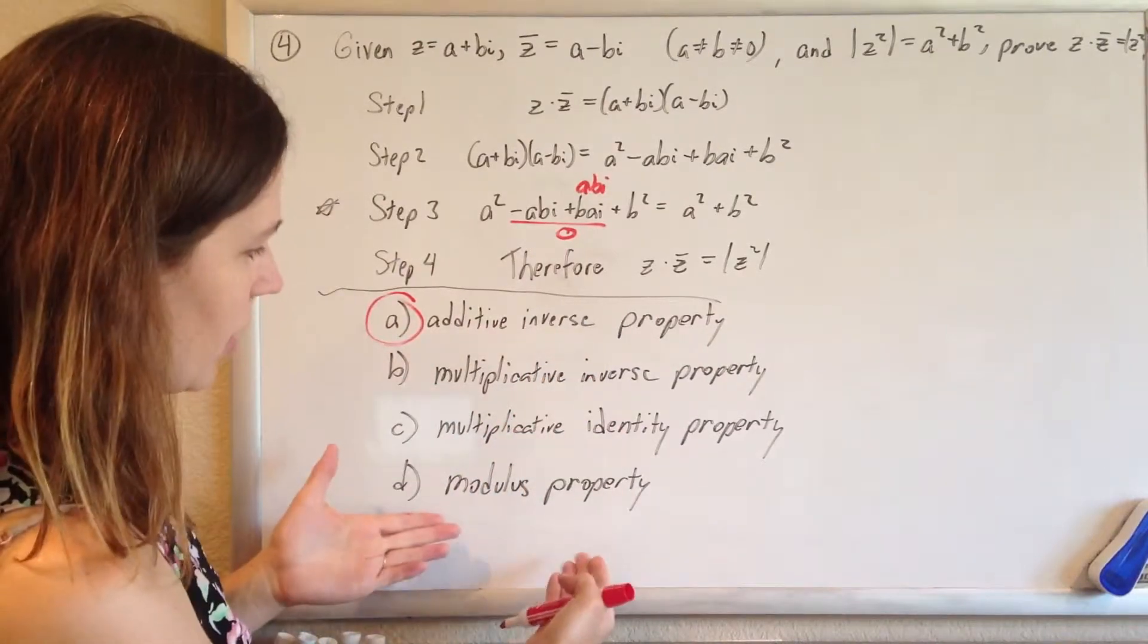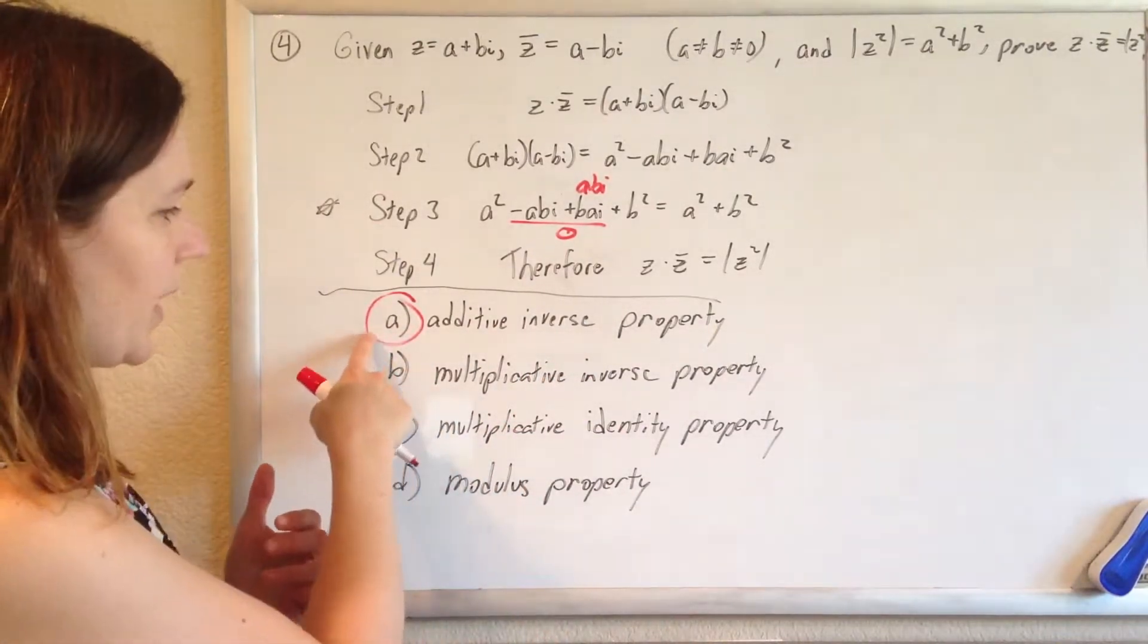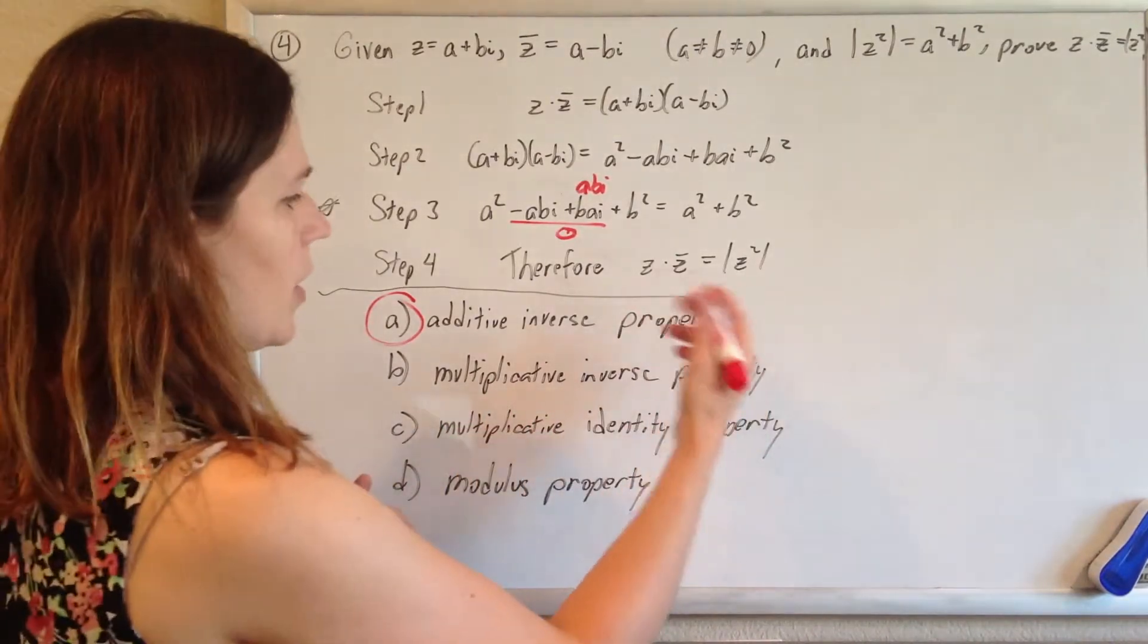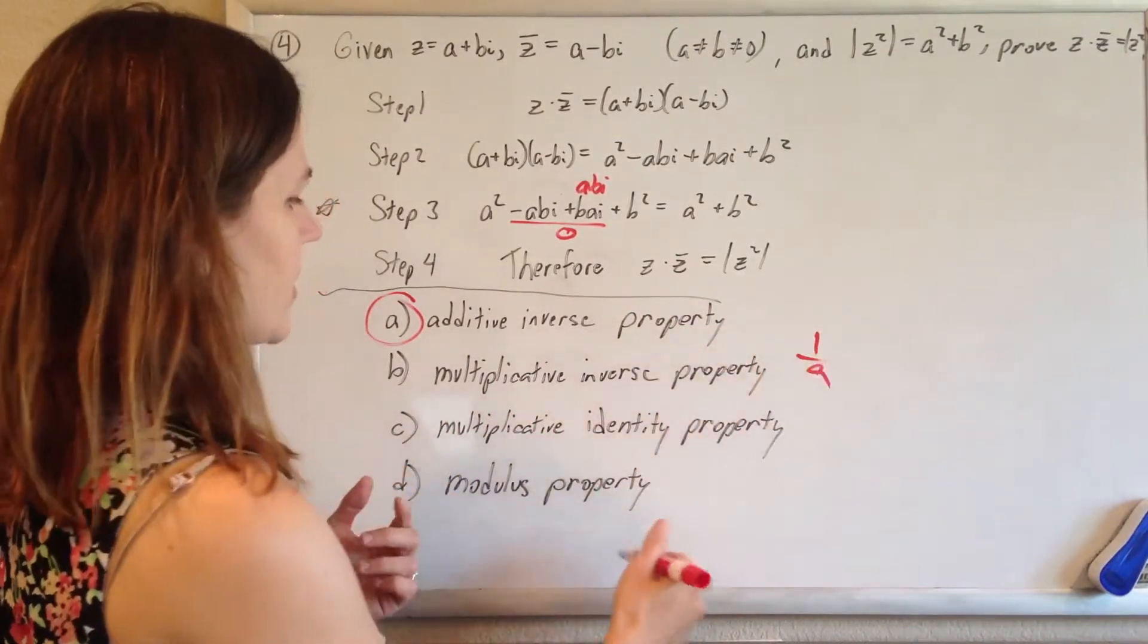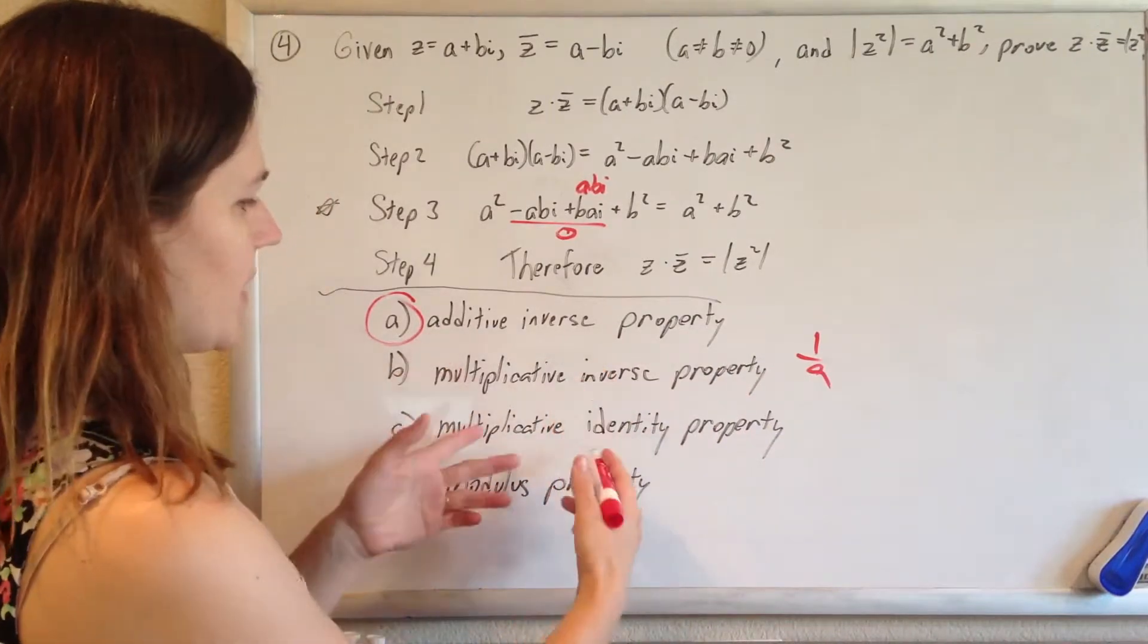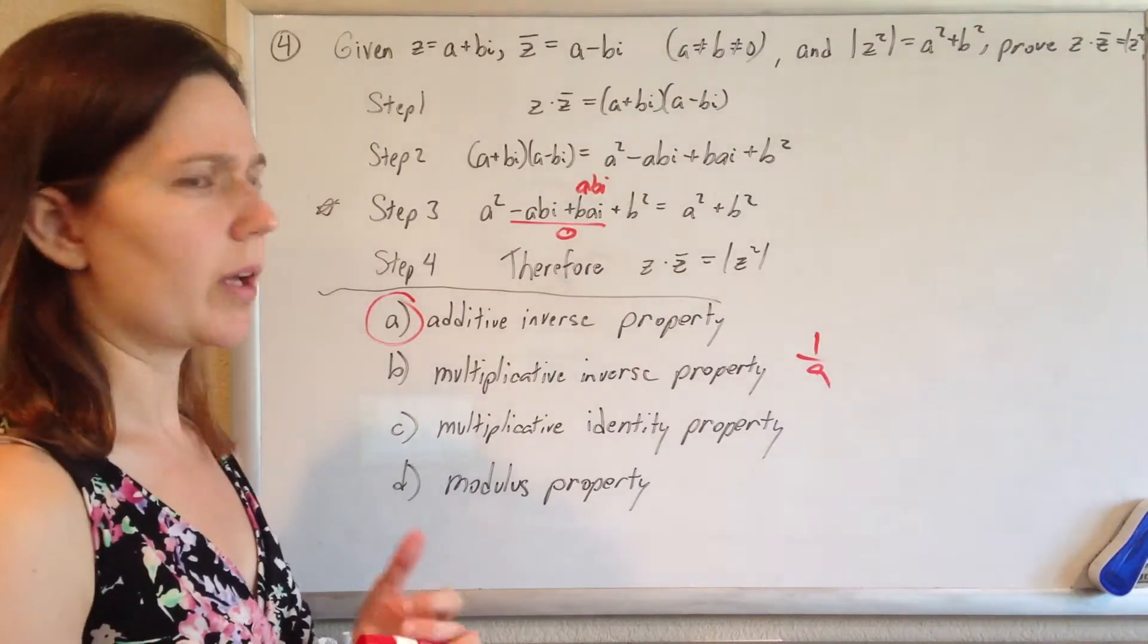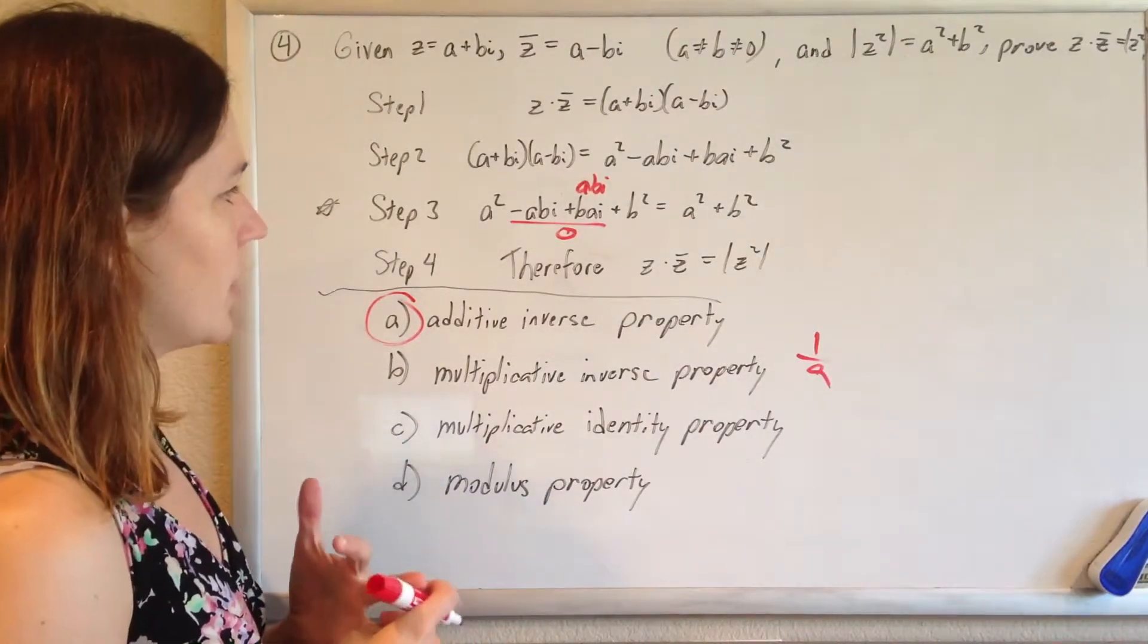But we don't see that here, and so this one applies. The rest of them just don't apply—multiplicative inverse, we're never multiplying by 1 over something. We're not multiplying by something and retaining its own property, and modulus property you just really don't care about even for this test. So yeah, that's that.